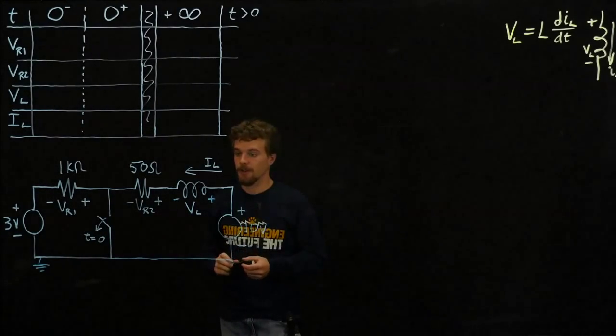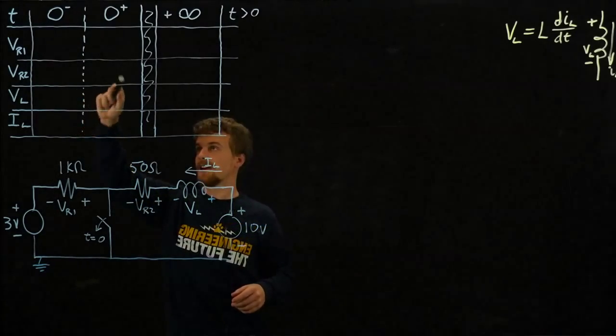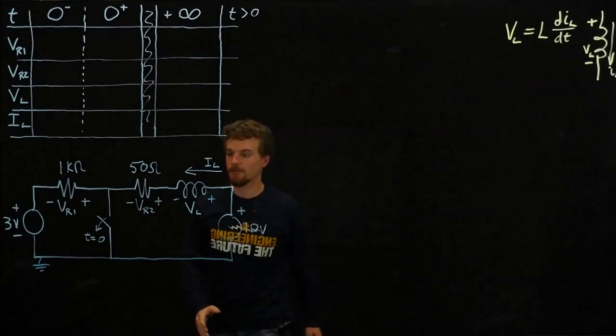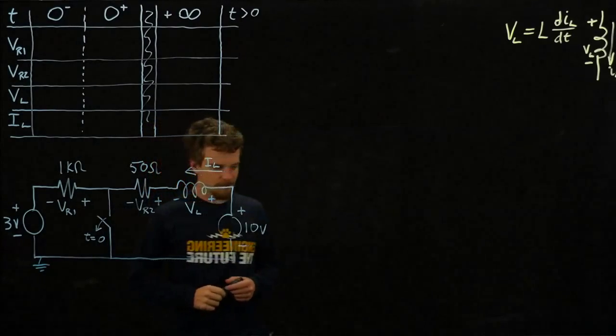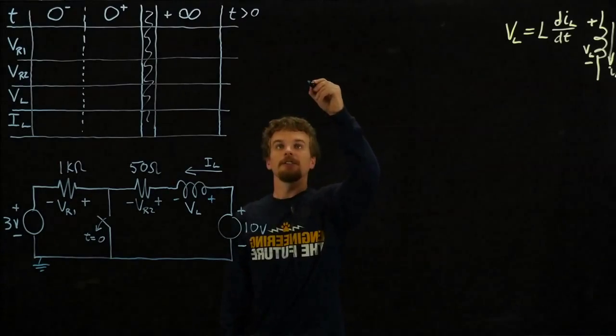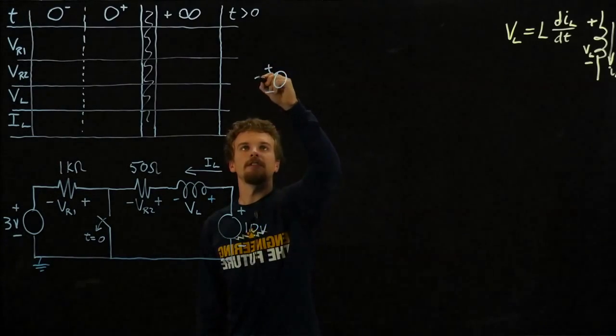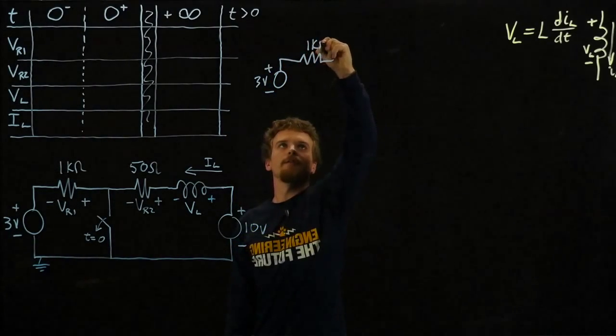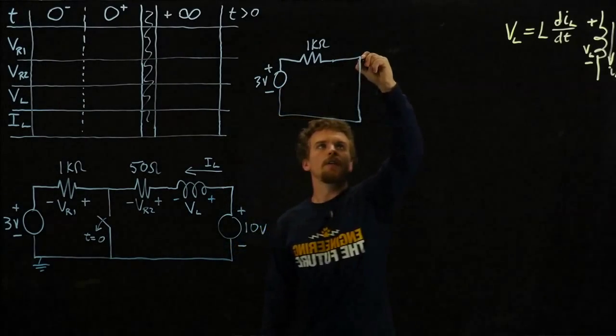We will start by filling in the values that we can see just from looking at the circuit. Before the switch closes, let's draw the circuit. We'll have a three volt source and a one kiloohm resistor.